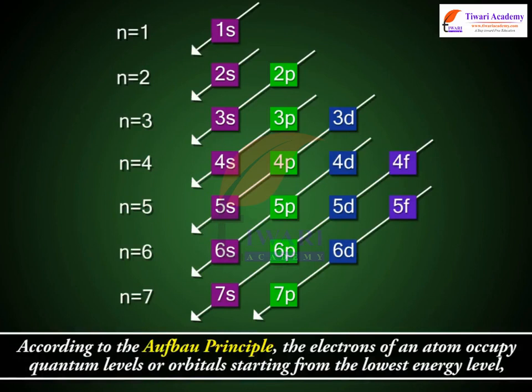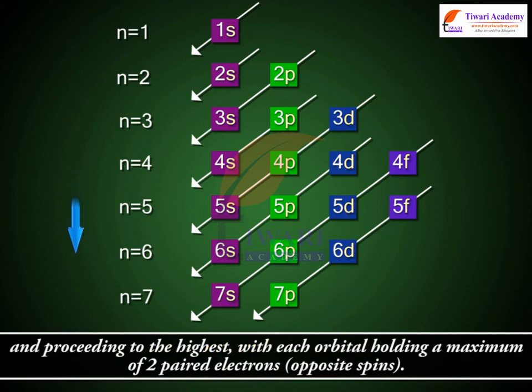According to the Aufbau principle, the electrons of an atom occupy quantum levels or orbitals starting from the lowest energy level and proceeding to the highest, with each orbital holding a maximum of two paired electrons, opposite spins.